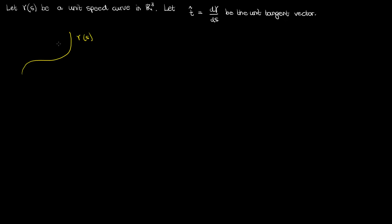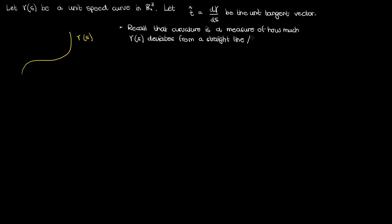Let's draw an example gamma of s to illustrate this tangent vector. Recall from my curvature video that the curvature of gamma is a measure of how much gamma deviates from a straight line — a measure of how much it deviates from the tangent vector. In that curvature video I used this normal vector n̂ to describe the direction in which gamma was curving away from the straight line.